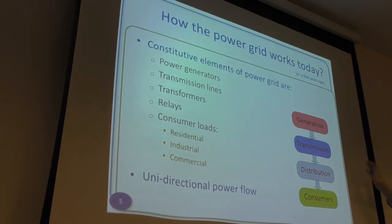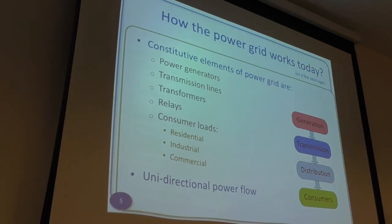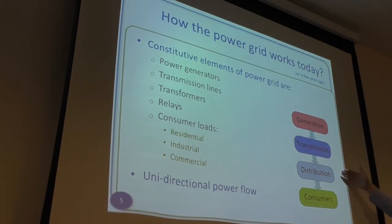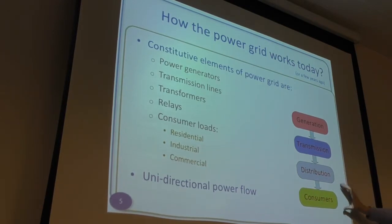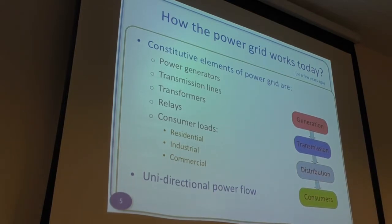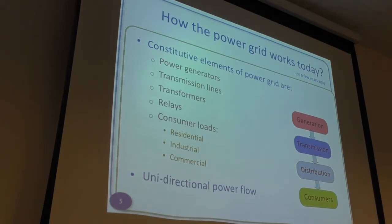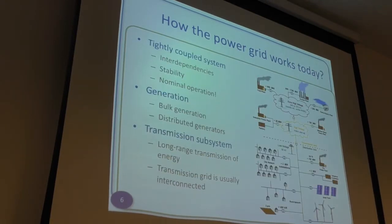Wind turbines are increasingly being distributed in the grid, and you also have smaller turbines — a farmer may have a wind turbine on his farm or solar panels. So you're actually starting to connect different generation capabilities at the distribution level. This is what is hard to support in the traditional power grid, so we need to rethink this model.